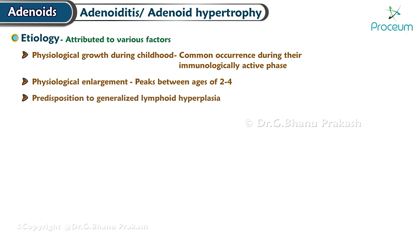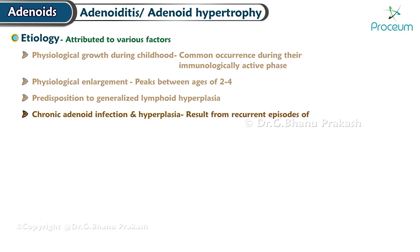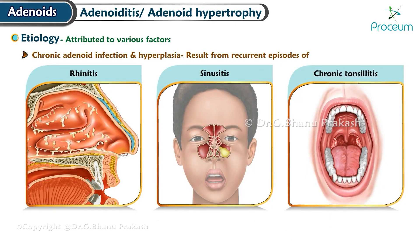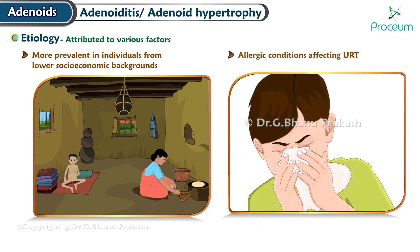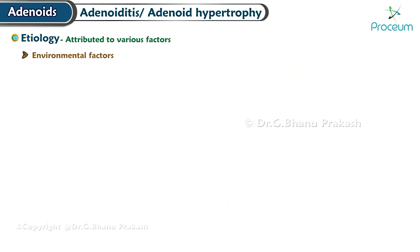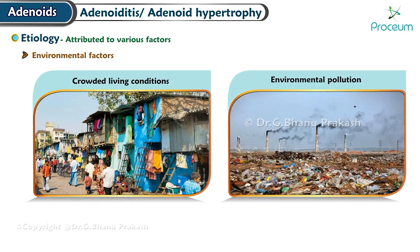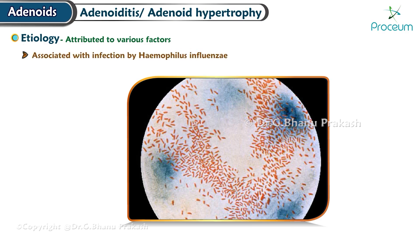Additionally, some children may have a predisposition to generalized lymphoid hyperplasia, in which the adenoids are also involved. Chronic adenoid infection and hyperplasia can result from recurrent episodes of rhinitis, sinusitis, or chronic tonsillitis. Adenoid hypertrophy is more prevalent in individuals from lower socioeconomic backgrounds. Allergic conditions affecting the upper respiratory tract, crowded living conditions, and environmental pollution may also contribute.